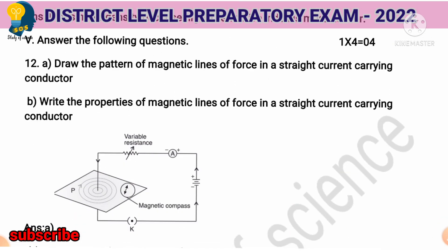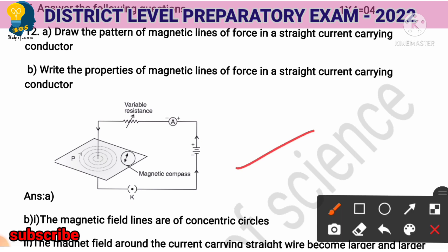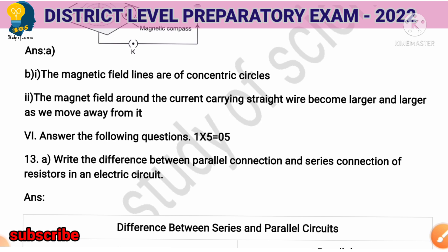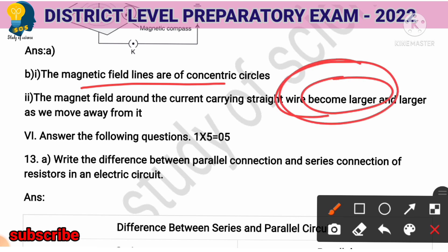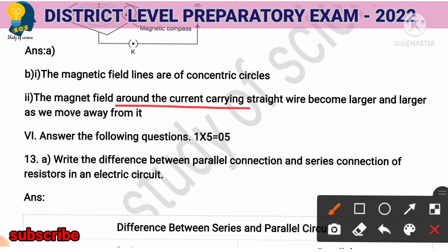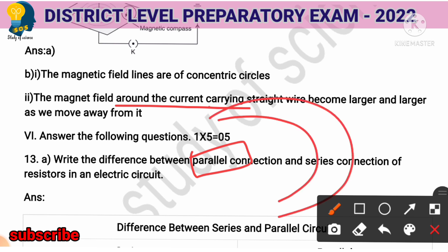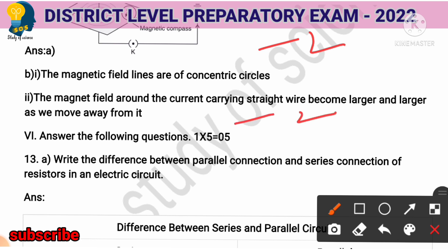Four-mark question: Draw the pattern of magnetic lines of force around a straight current-carrying conductor, and write the properties of magnetic lines of force. The magnetic field lines are concentric circles. The magnetic field around the current-carrying straight wire becomes larger and larger as we move away from it. Drawing the diagram earns 2 marks and writing the properties earns 2 marks — totaling 4 marks.